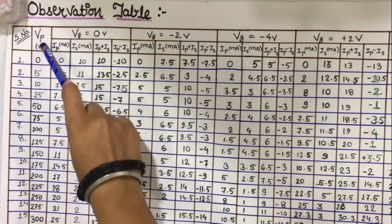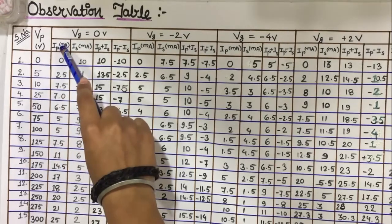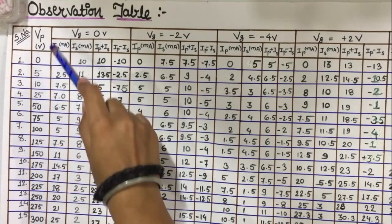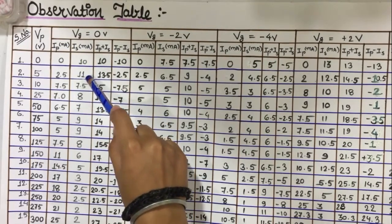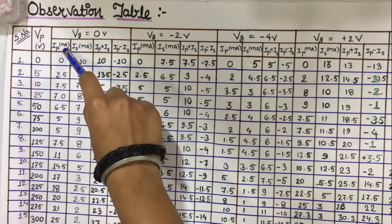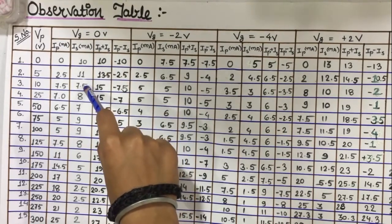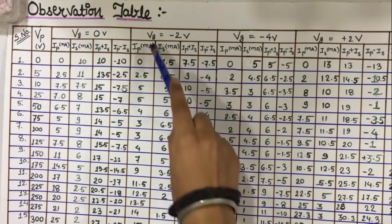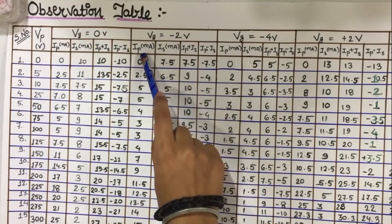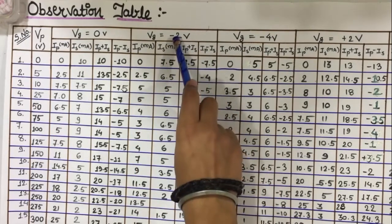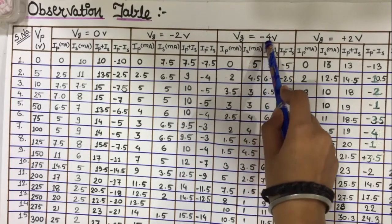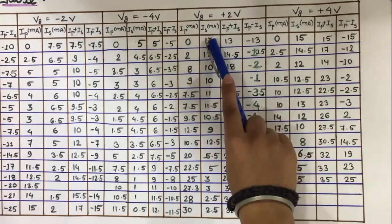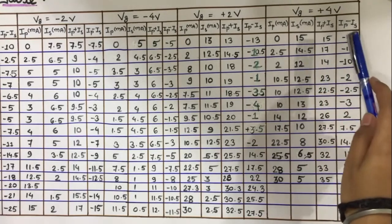For VG equals to 0V, IP equals to 0 mA and IS equals to 10 mA. For VG equals to 5V, IP equals to 2.5 mA and IS equals to 11 mA. For VG equals to 10V, IP equals to 7.5 mA and IS equals to 7.5 mA. In intervals of 25V up to 300V, record the readings of IP and IS. The columns show readings for VG equals to minus 2V, minus 4V, plus 2V and plus 4V respectively.